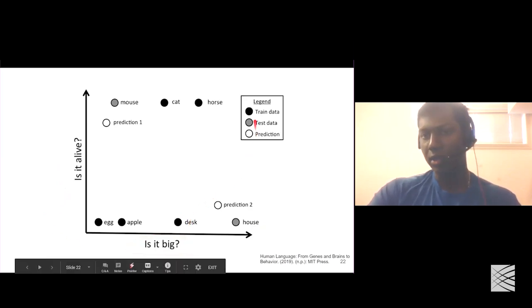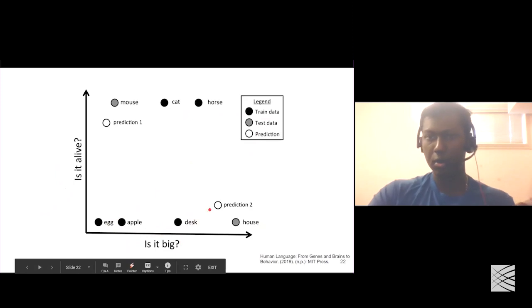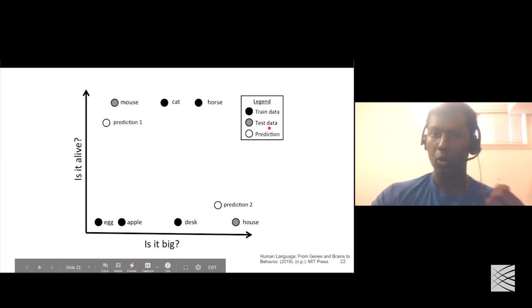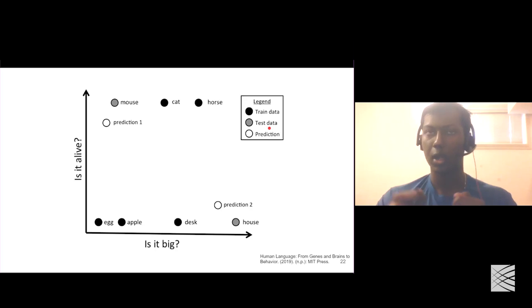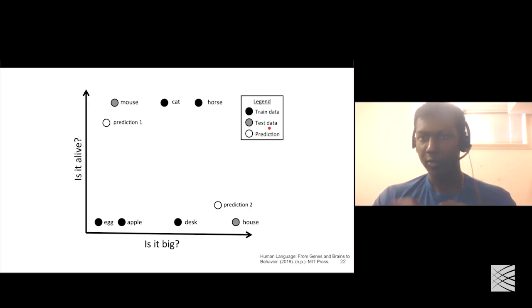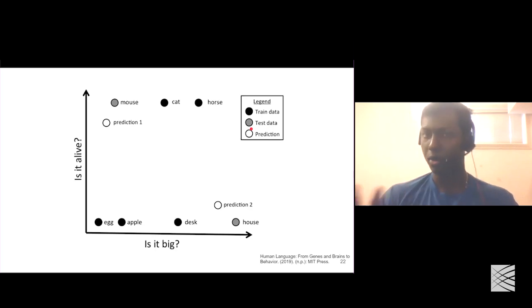During training, brain imaging data corresponds to words like cat, horse, egg, apple, and desk. During the testing phase, the model only has access to the brain imaging data, not the word vectors. The model needs both during training to learn the connection and find a good enough W, but during testing it cannot use the true word vectors to make predictions.